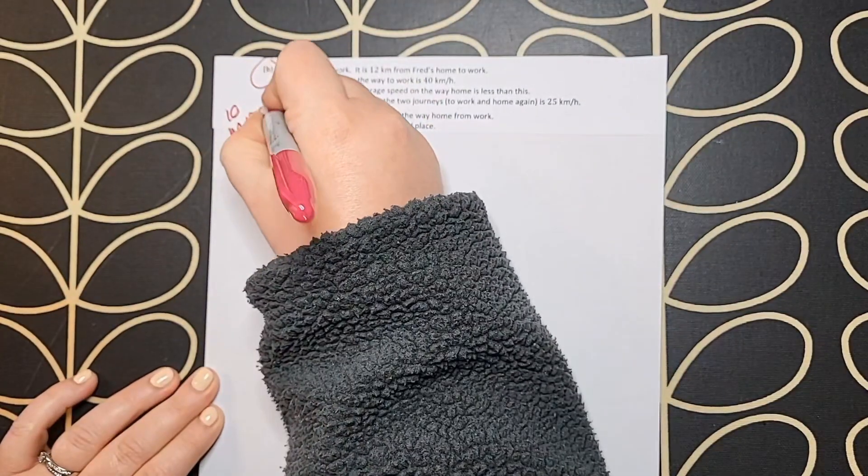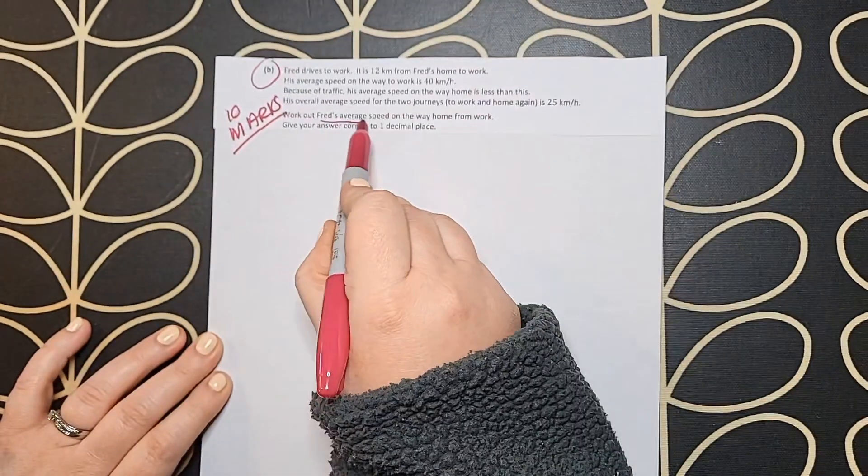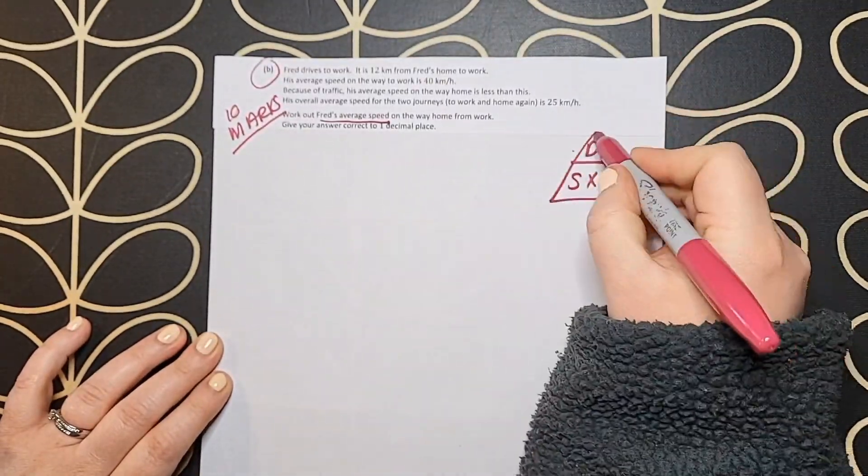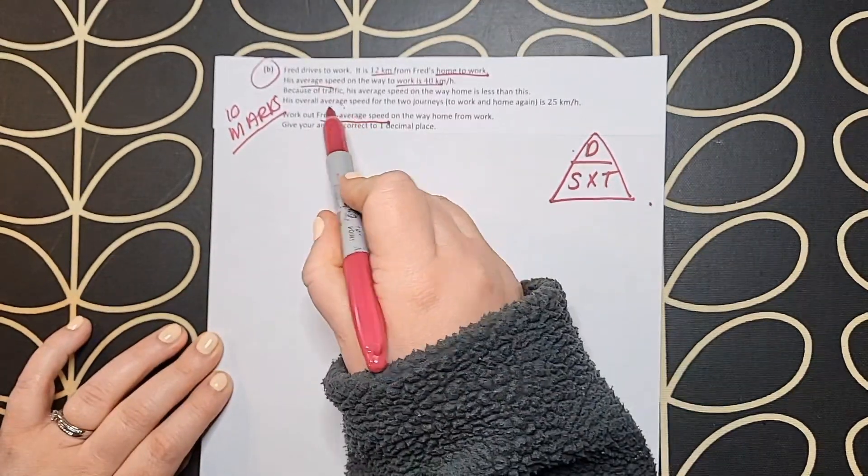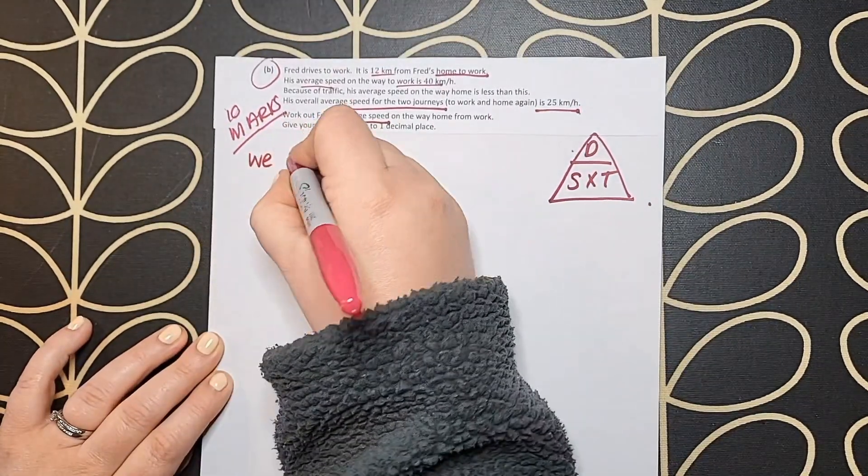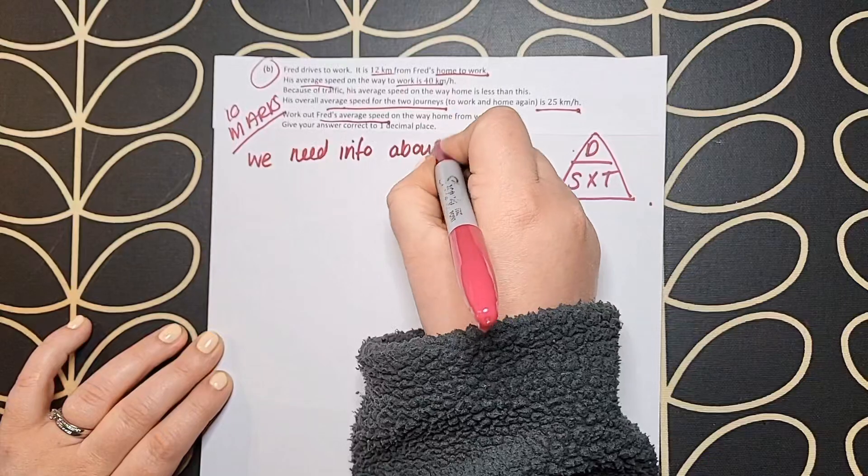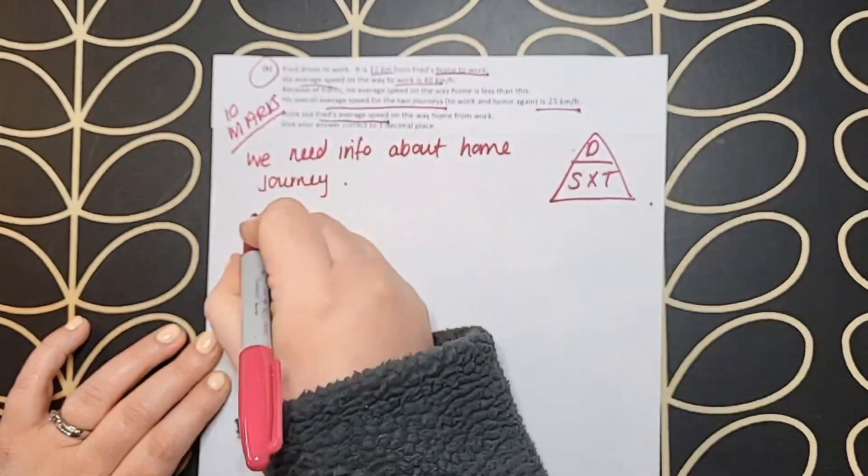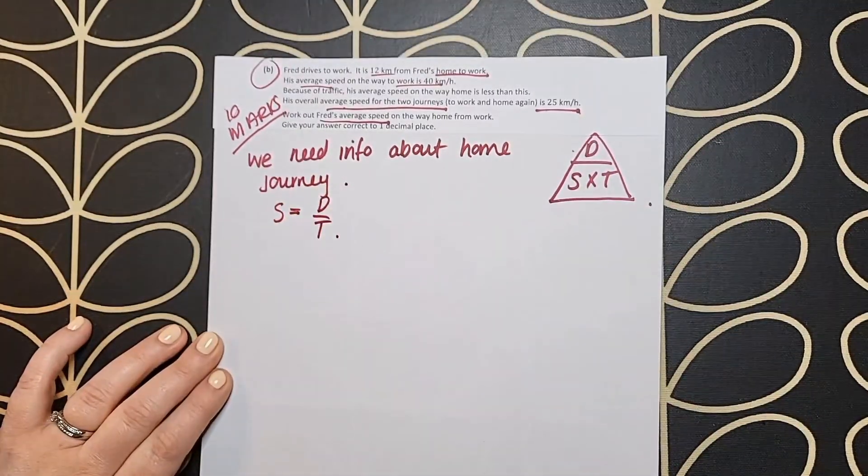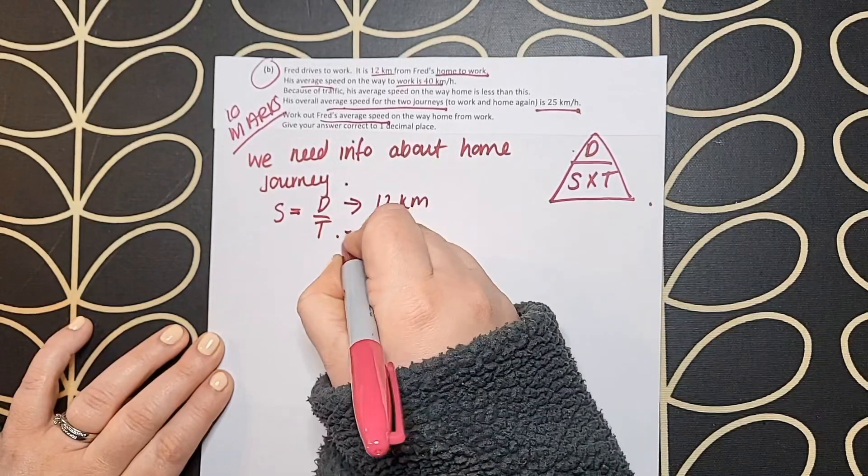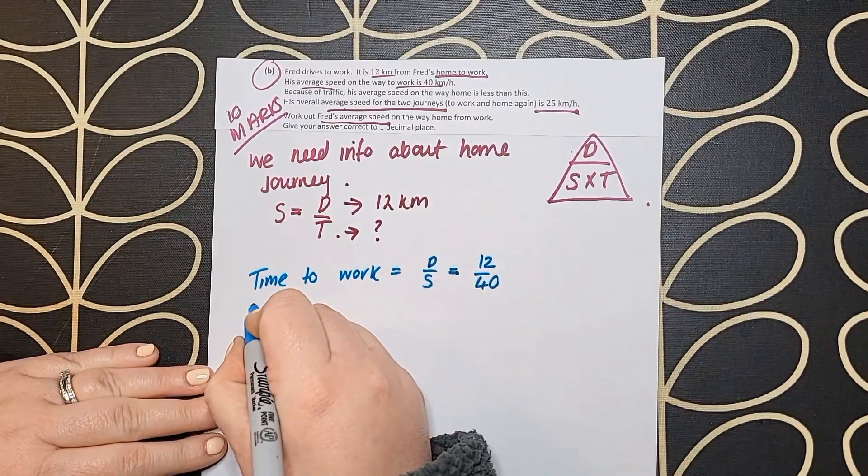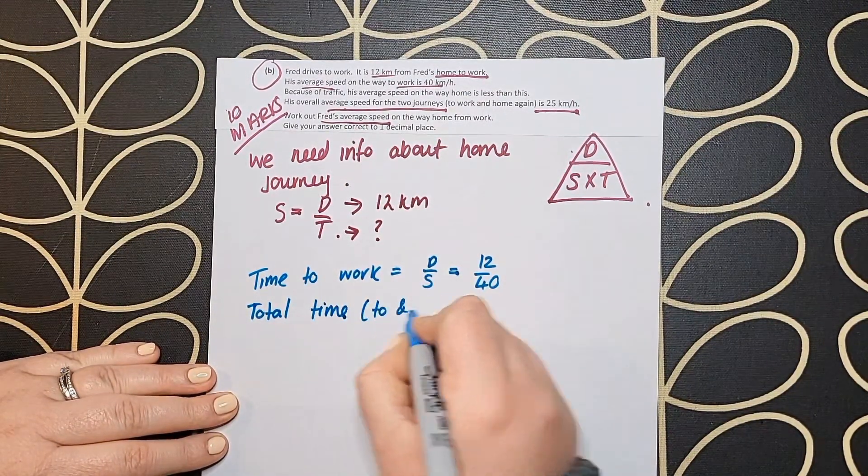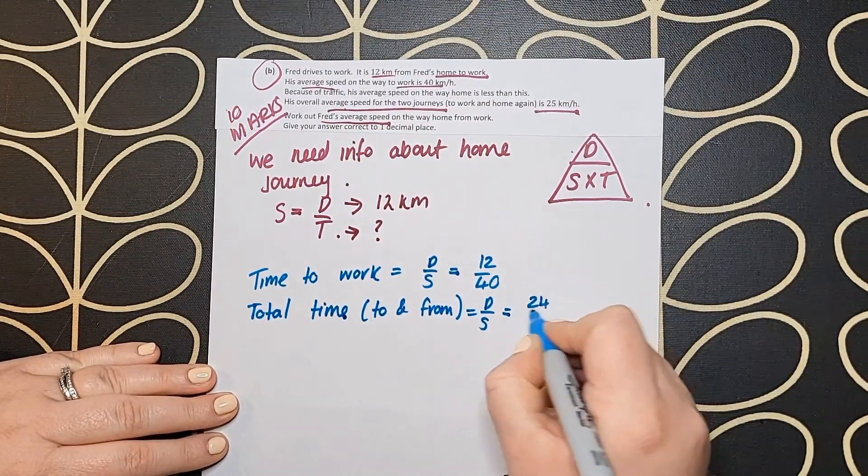In part b, this is a 10-marker question about distance, speed, and time for a journey to work. I always write down my distance-speed-time triangle - it's really important to have that close by. We're figuring out the average speed on his way home. We have lots of information but need to know more about his home journey. To calculate speed, I need distance over time. I know the distance home is 12 kilometers, but I don't know how long it's taking.